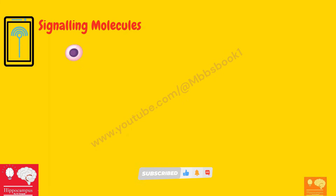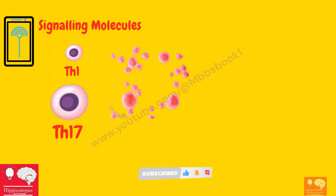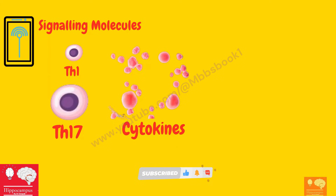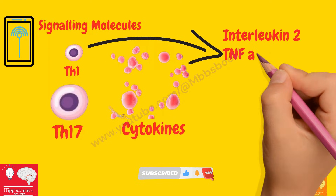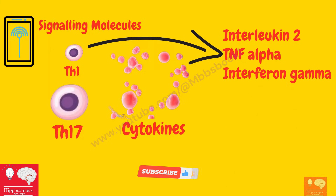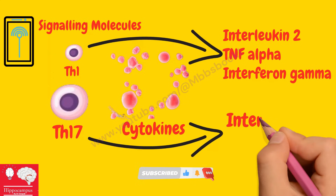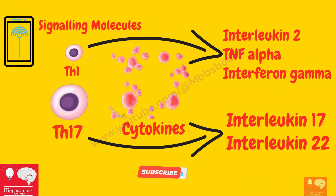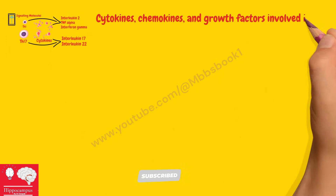Apart from this, we have signaling molecules. The Th17 and Th1 cells are going to produce signaling molecules known as cytokines. There are different kinds of cytokines: the Th1 subset is going to produce interleukin-2, TNF-α, and interferon-γ. Moving on to the Th17 subset, which is going to produce interleukin-17 and interleukin-22. These are the important factors implied in the etiopathogenesis of psoriasis.